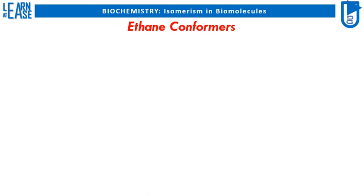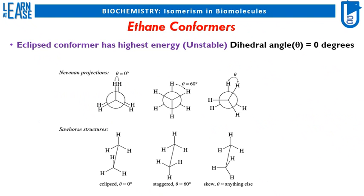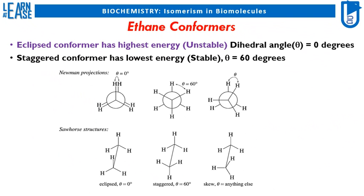All the different possible conformers of ethane are shown using sawhorse projection. Each conformer has a different dihedral angle theta from its neighboring conformer. The eclipsed conformer has the highest energy, making it the most unstable conformer, with dihedral angle theta equal to zero degrees. On the contrary, the staggered conformer has the lowest energy, making it the most stable conformer, with dihedral angle theta equal to 60 degrees.